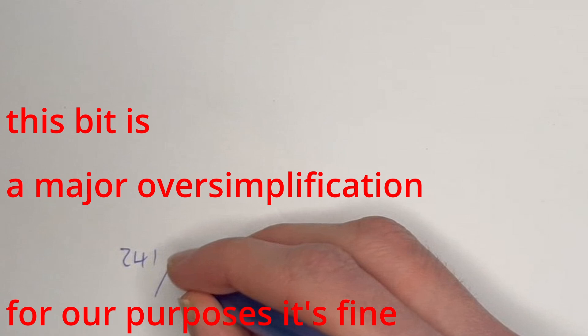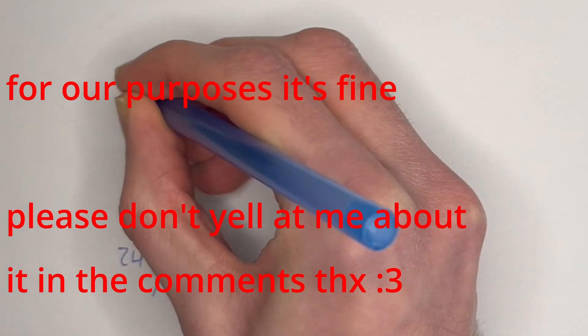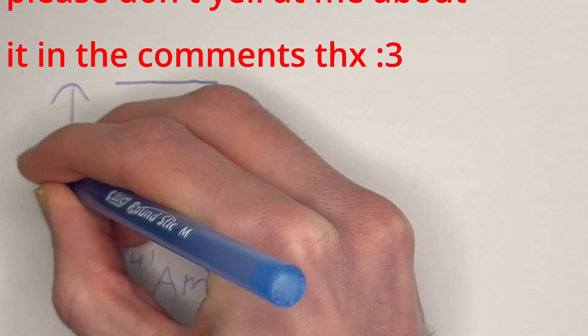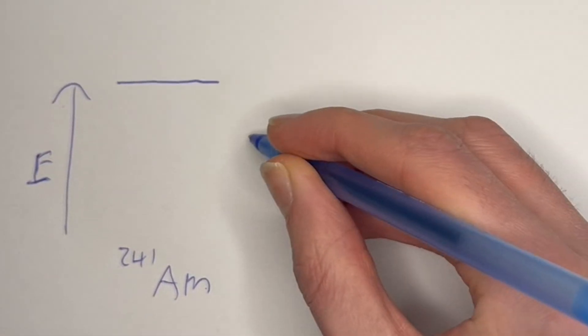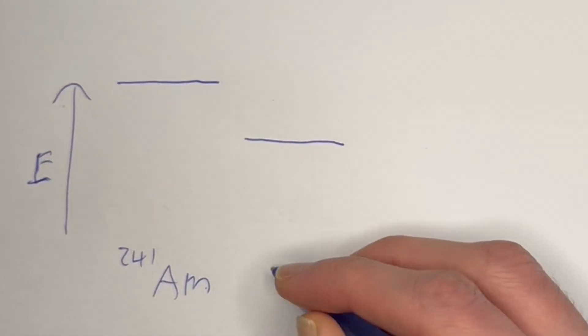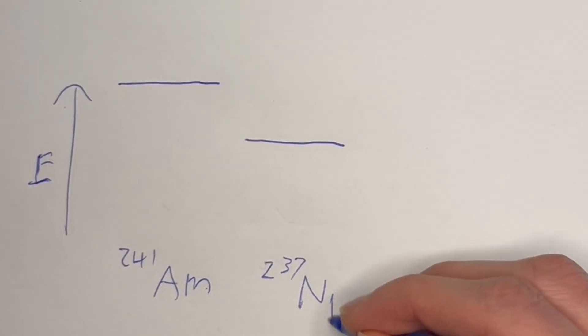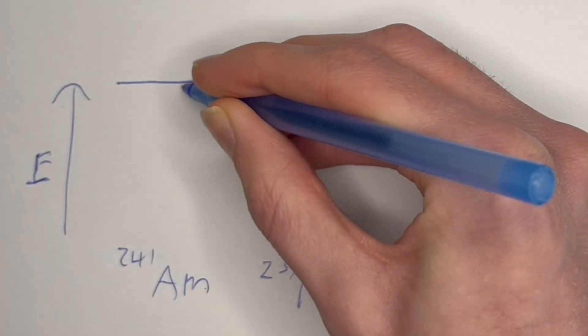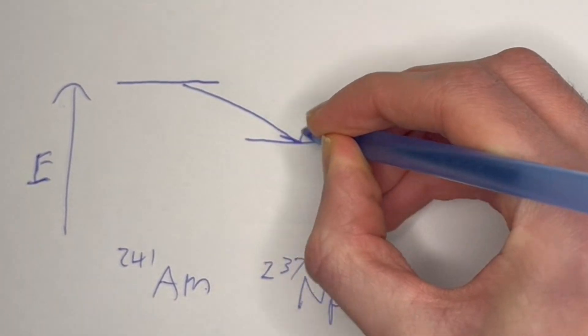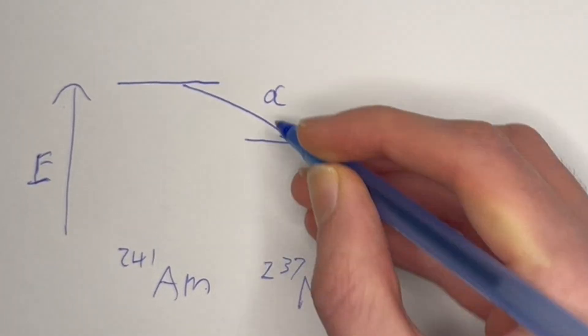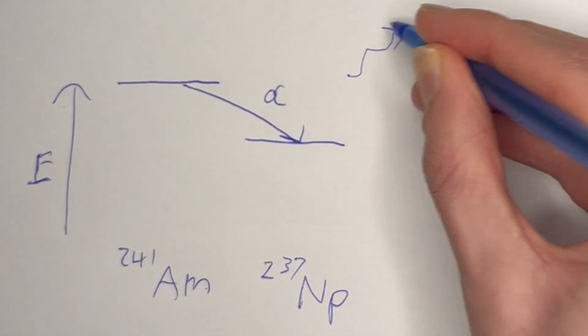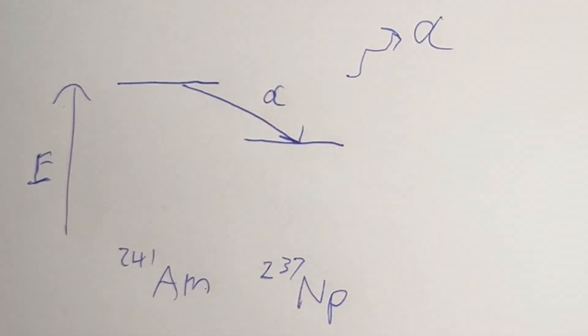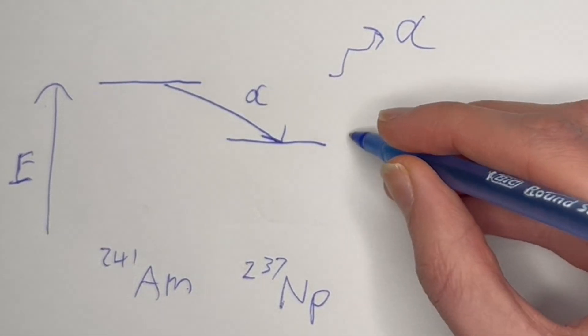What matters for us is that you need that source of alpha particles which is usually the isotope Americium-241. Americium-241 is radioactive which means that its nucleus is in some unstable high energy state and it's going to eventually decay and we're going to end up with a nucleus that's of a totally different element with a different number of protons and neutrons. We're going to get there by releasing that energy in the form of an alpha particle. Those two neutrons and two protons are going to escape as an alpha particle.